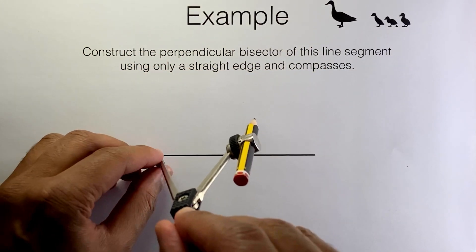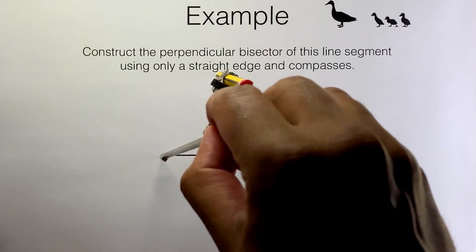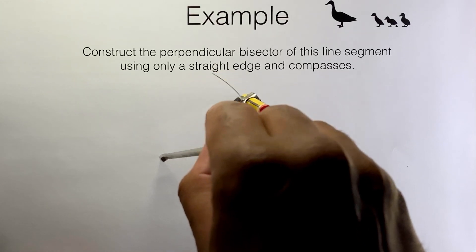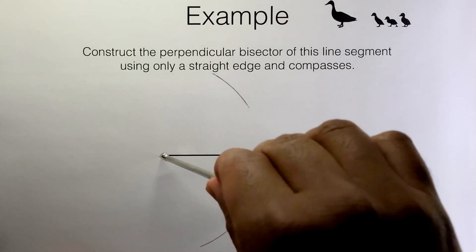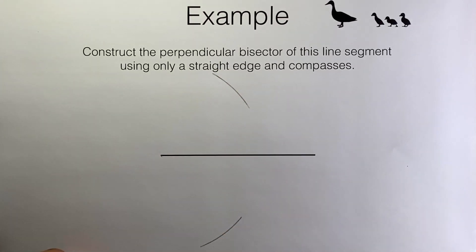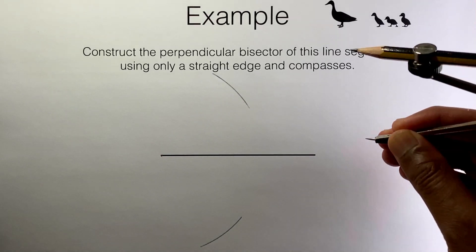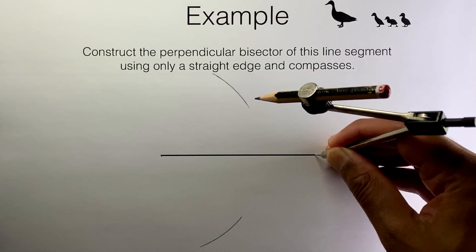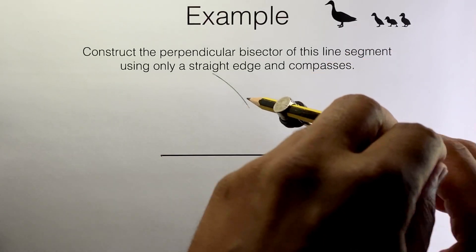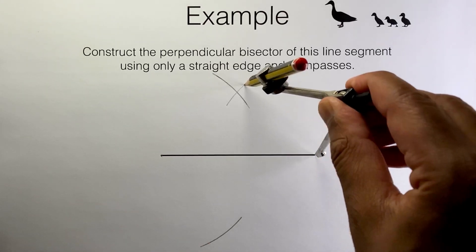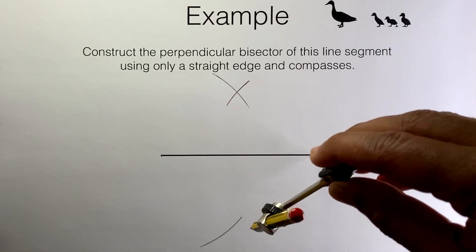Then I draw a bit of an arc up here and down here. Then without adjusting the compasses I'm going to move the needle to the other endpoint of the line segment, and I'm going to draw a bit of an arc again up here and down here.